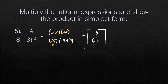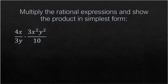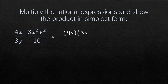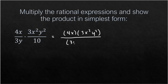Next example: (4x/3y) multiplied by (3x²y²/10). We multiply the numerators together — 4x times 3x²y² — and the denominators together — 3y times 10.